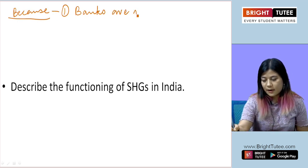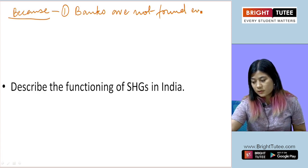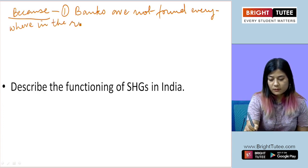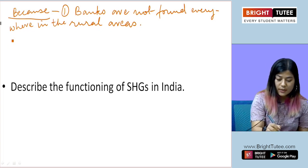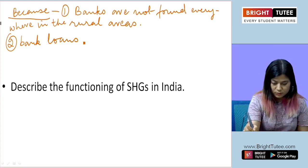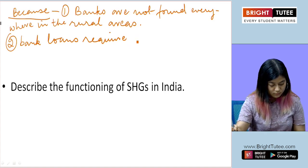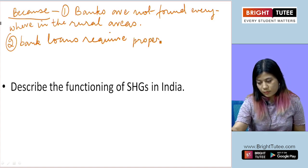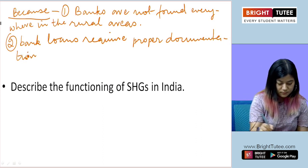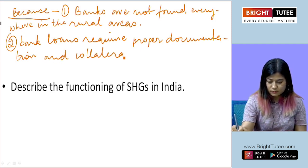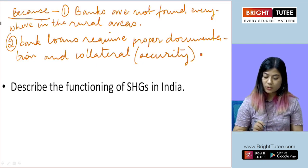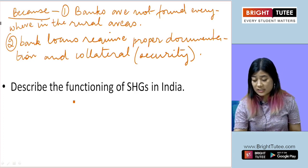Poor households in India still depend on informal sources of credit because: number one, banks are not found everywhere in the rural areas; and number two, bank loans require proper documentation and collateral or security.